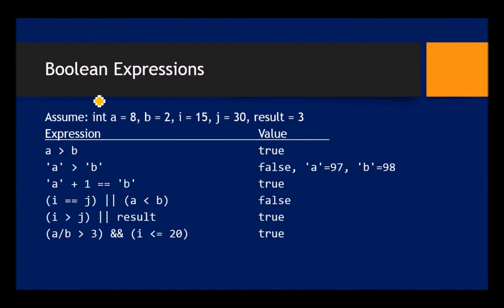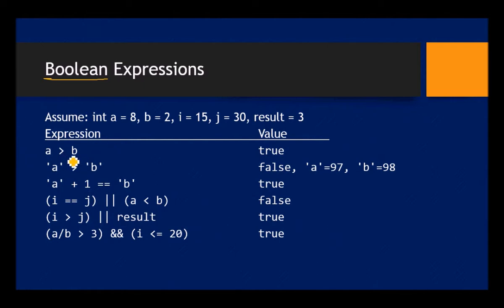We can use relational and logical operators to create Boolean expressions — something that evaluates to true or false. For example, with integers a=8, b=2, i=15, j=30: is 'a greater than b'? True, because 8 is greater than 2. Is 'a greater than b' (using single quotes, so comparing characters)? False, because the ASCII code for 'a' is 97, which is less than 'b' at 98.